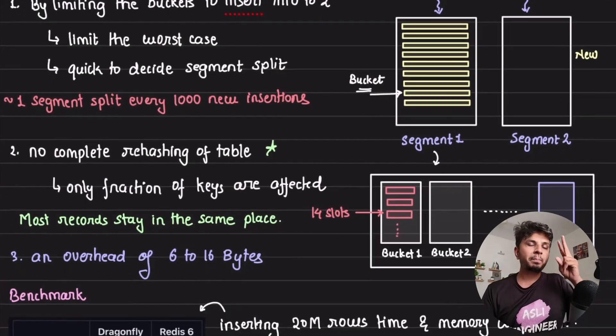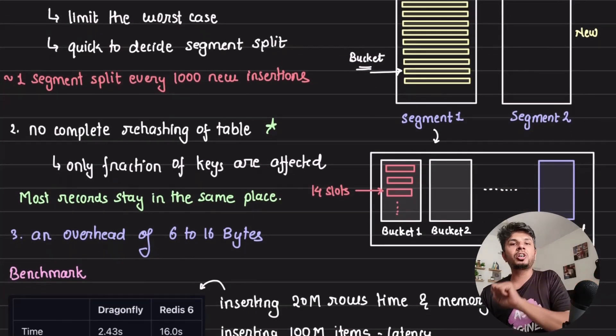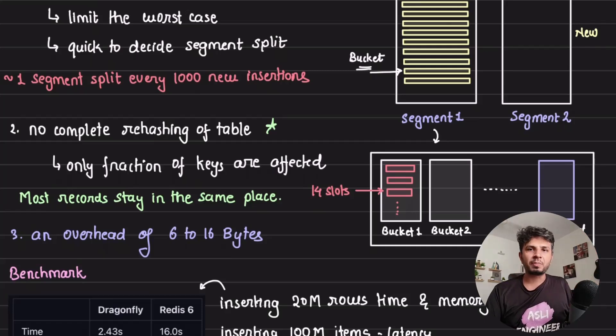Second, and the biggest advantage of this is no complete rehashing of your table is required. In case of a classic hash table implementation, when my hash table was resized to its double size, I would have to rehash everything from my first array to the secondary for all items.